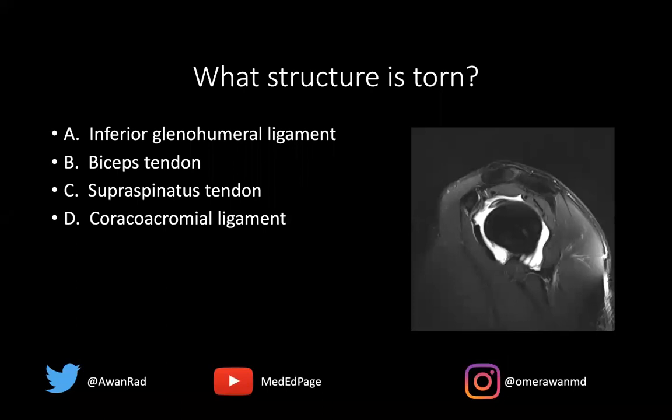Is this an inferior glenohumeral ligament tear, a biceps tendon tear, a supraspinatus tendon tear, or a coracoacromial ligament tear? What structure is torn?